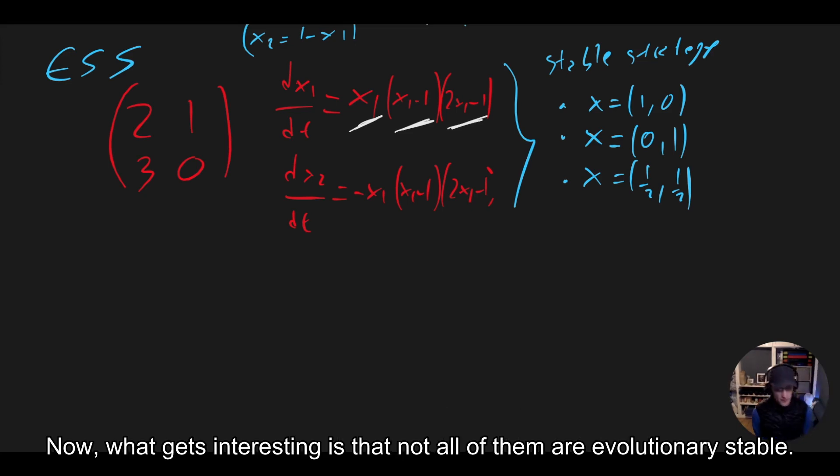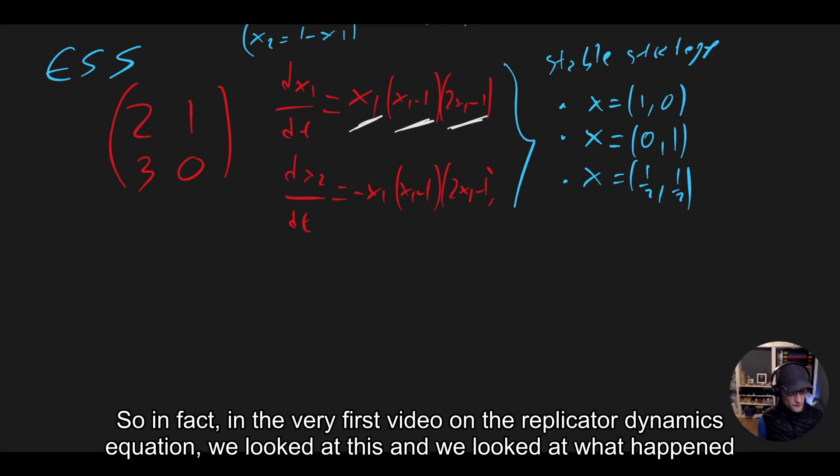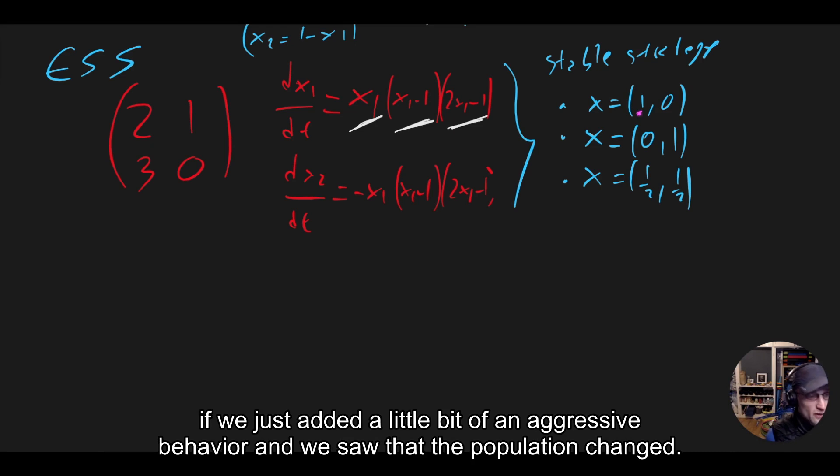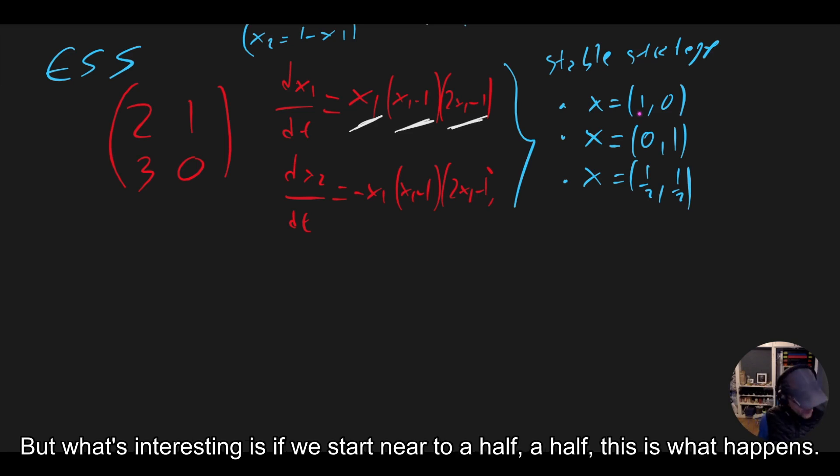Now, what gets interesting is that not all of them are evolutionary stable. So in fact, in the very first video on the replicator dynamics equation, we looked at this and we looked at what happened if we just added a little bit of an aggressive behavior and we saw that the population changed.